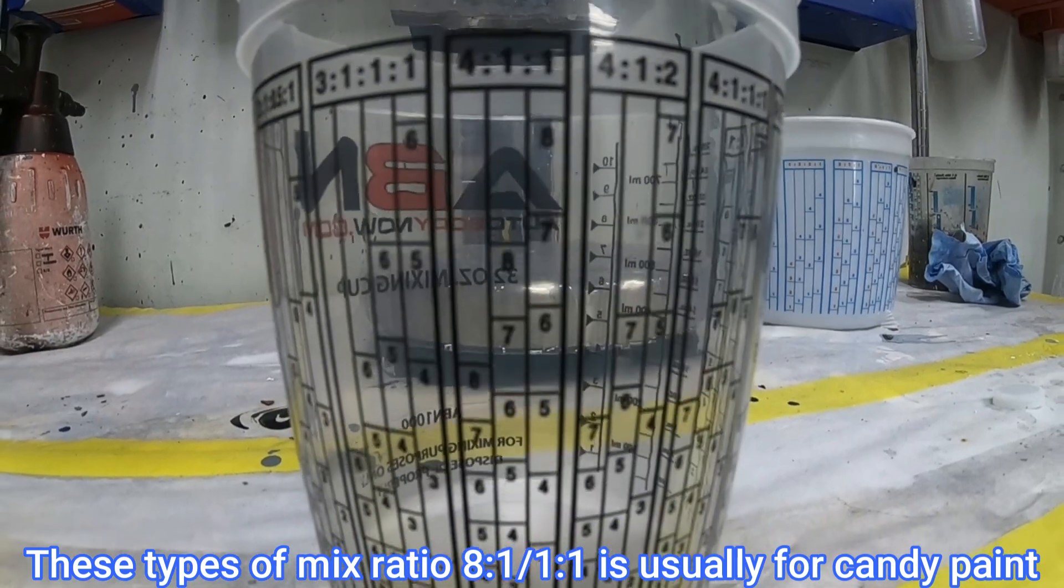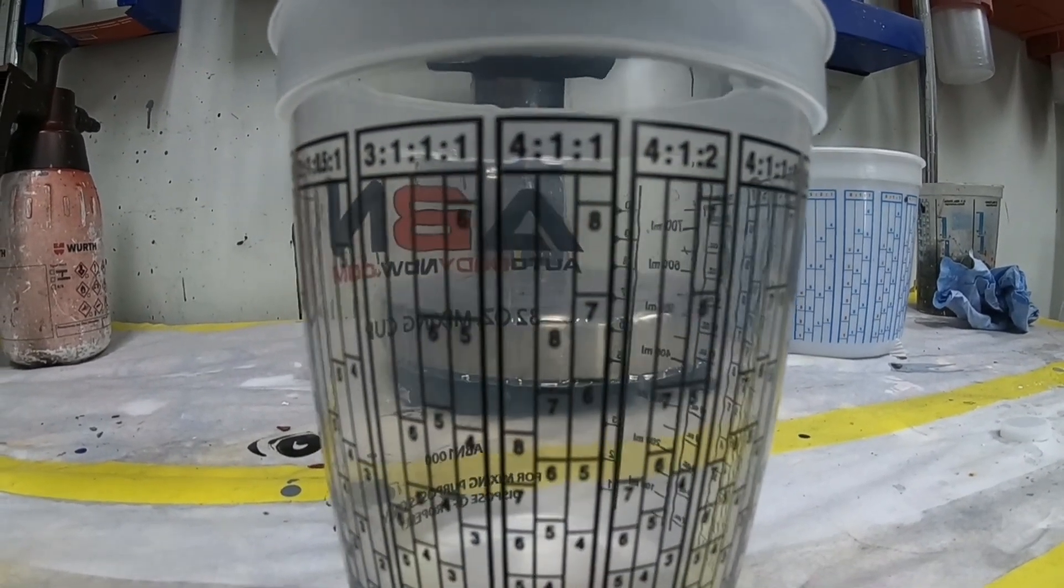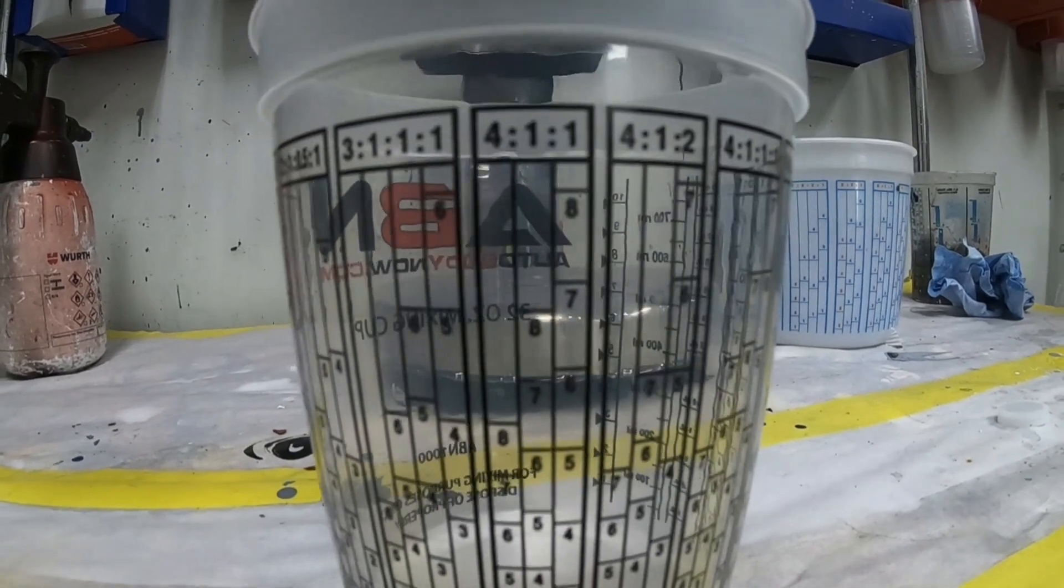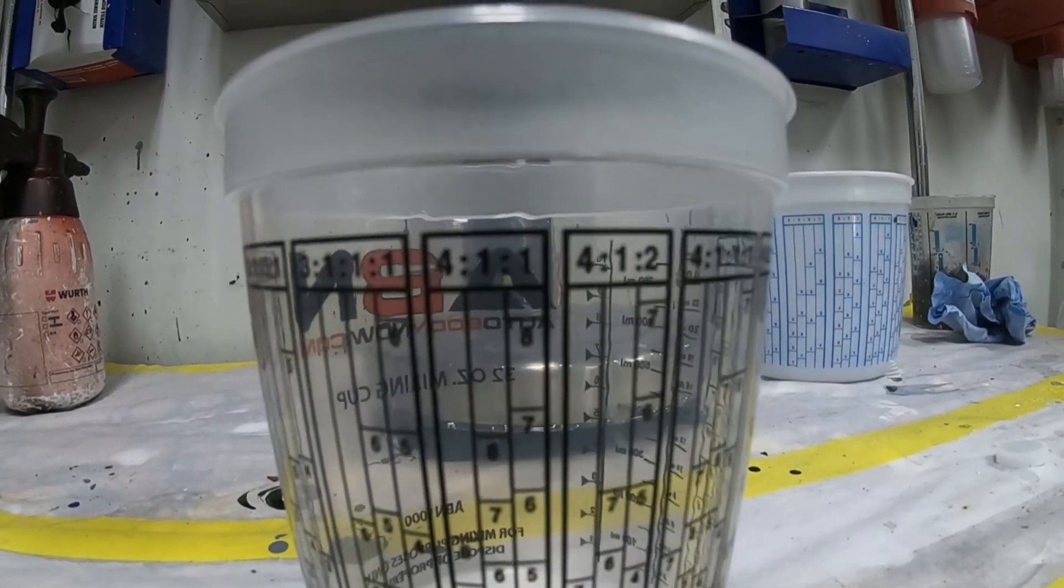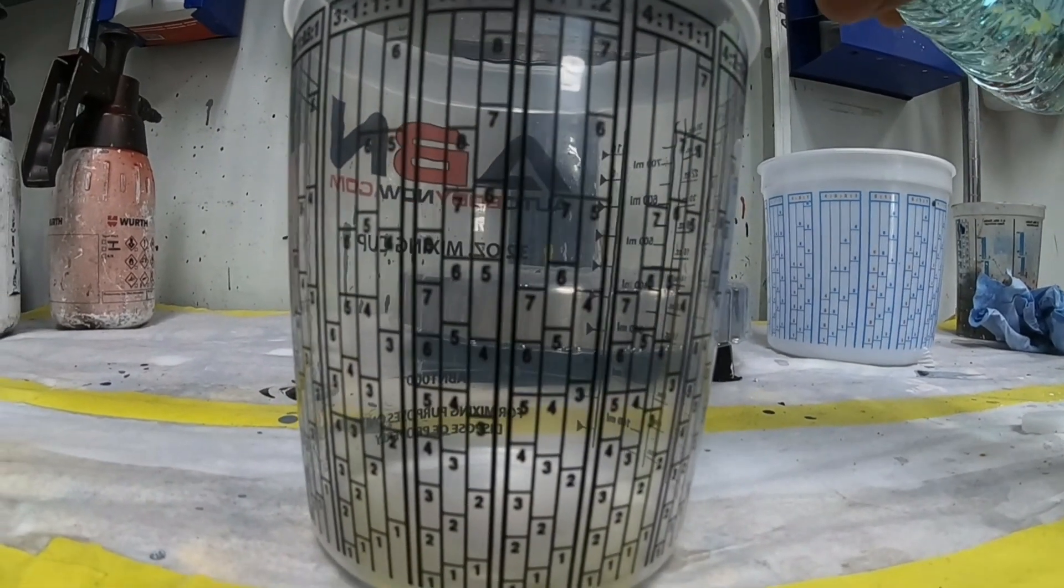First thing you want to do is locate your 4-1-1 scale. You can see where it is right there, 4-1-1, but we're mixing a 4 to 1. Now let me say this: this is not real product I'm using in this video. This is just for demonstration purposes.